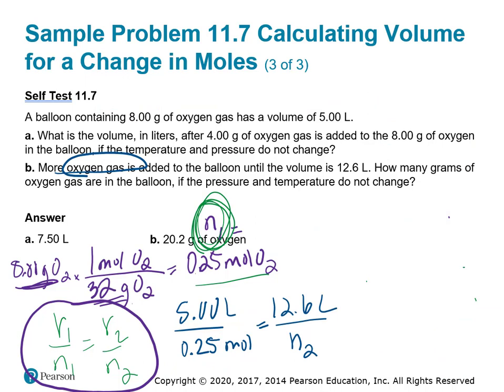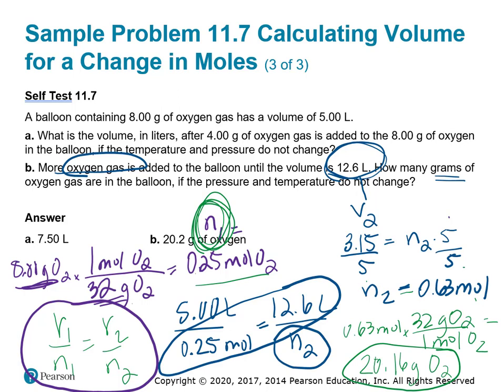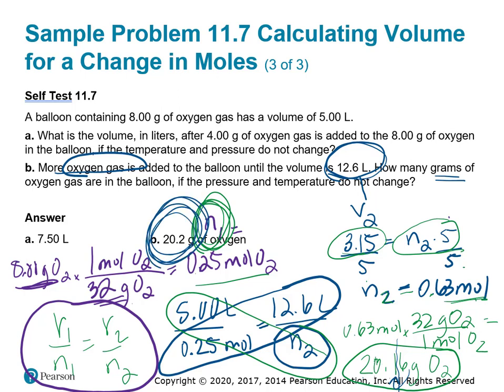The second part says more oxygen gas is added to the balloon and the volume is 12.6 liters, so that's our V2. How many grams of oxygen gas are in the balloon? We need to find moles first, and if I know moles, I can get to grams. I set up my initial volume and initial moles, 5 over 0.25 equals 12.6 over N2. Cross-multiply, 12.6 times 0.25. I got 3.15, and 5 times N2. Divide both sides by 5 to get N2 by itself, and I would get my second mole value of 0.63 moles of oxygen. Now let's go from moles to grams. In one mole of O2, there's 32 grams of O2. That gives 20.16 grams of oxygen, which is the total mass in the balloon. We want three significant figures, this is four. So 1, 2, 3, and that 6 makes that 1 a 2. We should have 20.2 grams of oxygen.